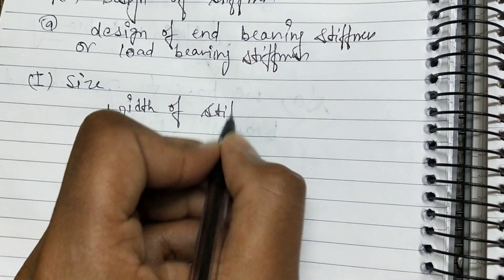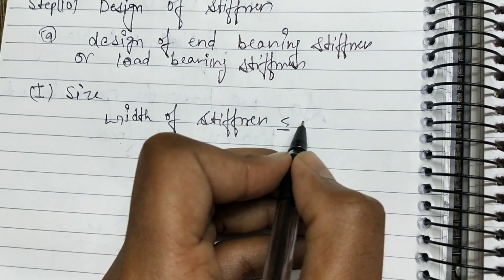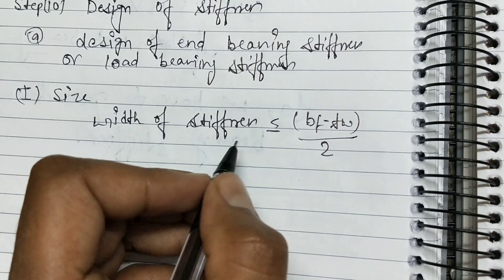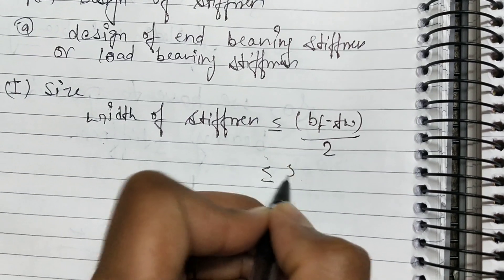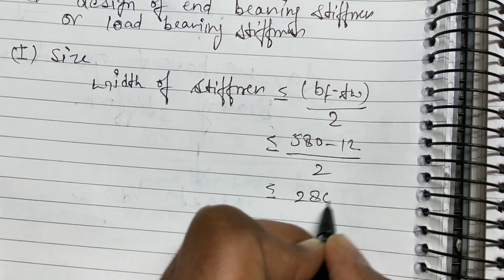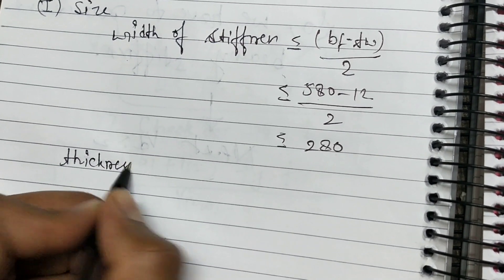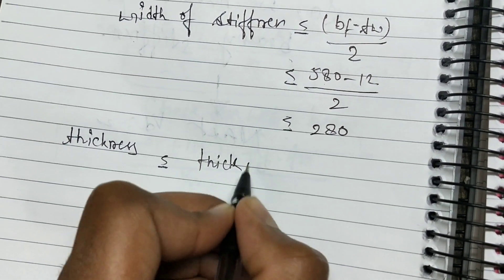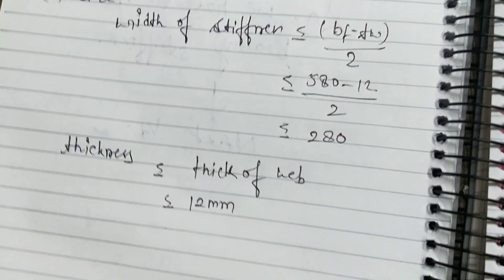The size of the stiffener should be less than or equal to (BF minus TW) divided by 2. That is (580 minus 12) divided by 2, which gives 284 mm. The thickness of the stiffener should be less than or equal to the thickness of the flange plate, which was 12 mm.